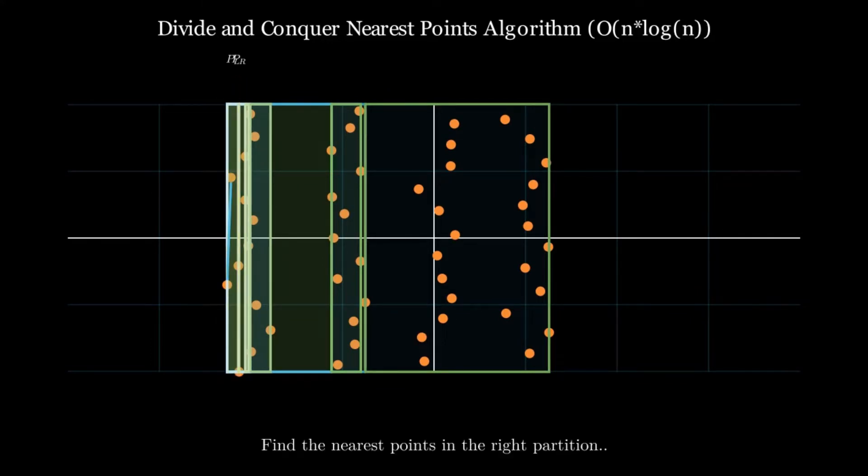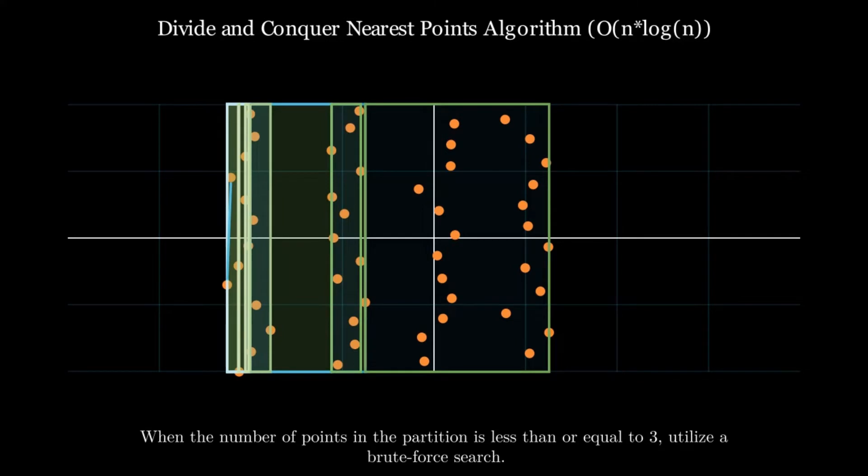Now, we'll go back up to the parent partition and search the right partition, which also happens to have three or less points. Once we find the minimum distance in the right partition, we need to compare the shortest distances from left and right partitions, and we'll call this shortest distance delta.